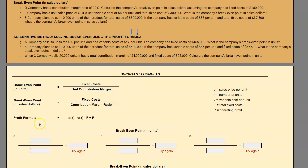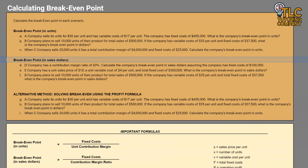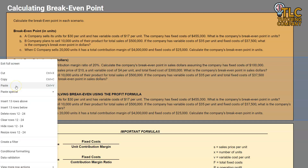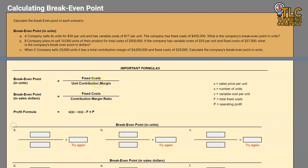Let's take a look at our first example. I'm going to hide a few lines to make it a little easier to see. Our first problem says a company sells its units for $30 per unit and has a variable cost of $17 per unit. The company has fixed costs of $455,000, and they want us to find how many units the company needs to sell in order to break even.